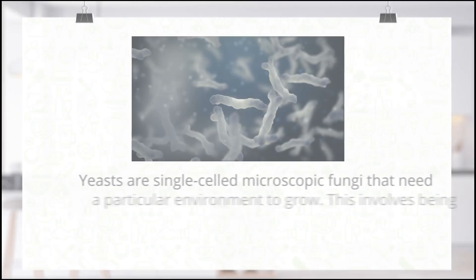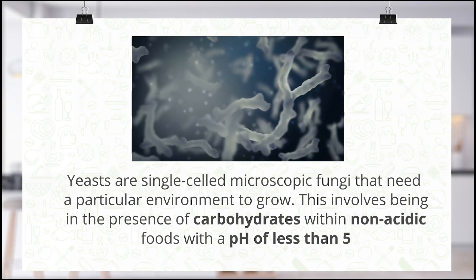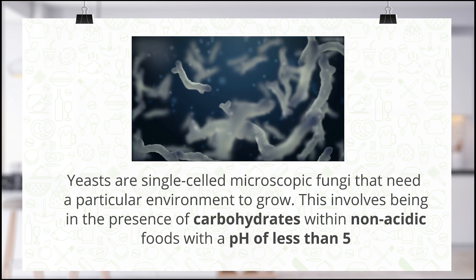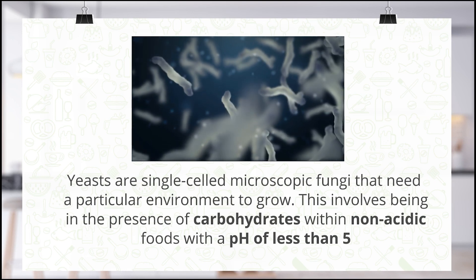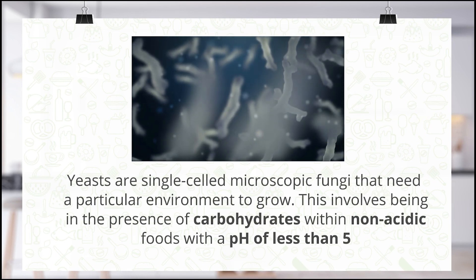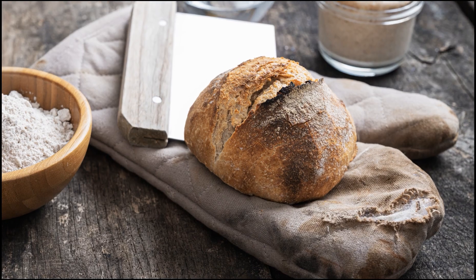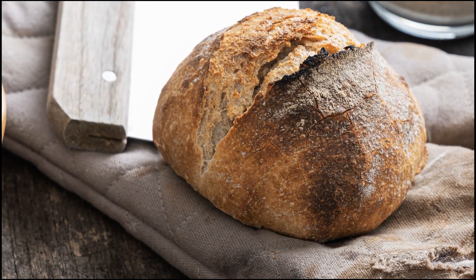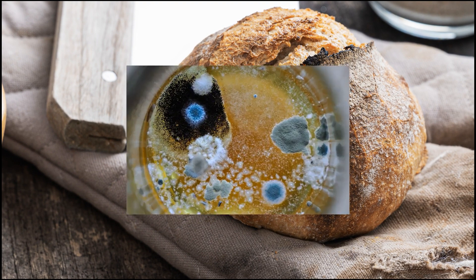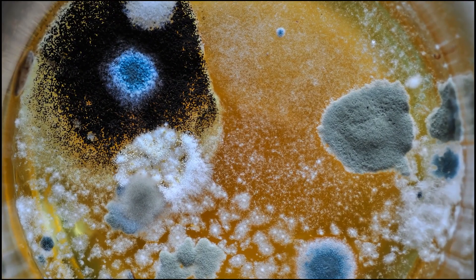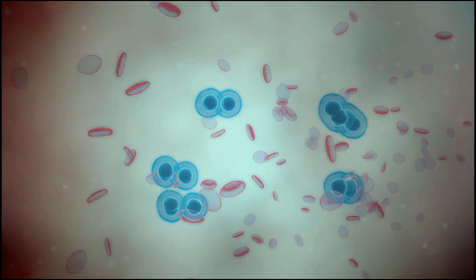Another microorganism of note is yeast. Yeasts are single-celled microscopic fungi that need a particular environment to grow — this involves being in the presence of carbohydrates, within non-acidic foods with a pH of less than five. Many foods can offer this environment and become spoiled. Not only are yeasts obvious when they grow on the surface of food, but they can also form in drinks such as juices and produce discoloration and toxins.